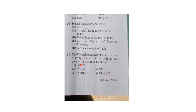The second question from the higher education section was: 'The scheme introduced by the government to bridge the gap in skills to use computing devices between urban and rural teachers.' The government introduced the National Mission on Education through ICT (NMEICT). If you look at the options, neither NMEICT nor NMICT appears correctly.